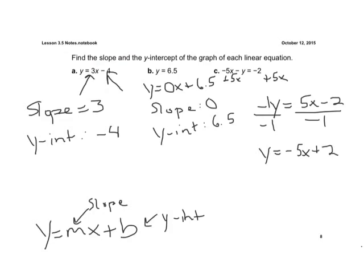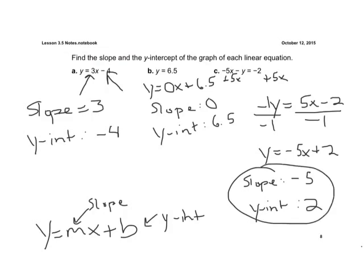And then our last step, again, slope. It's in slope intercept form, so we can pick them right out. Our slope is going to be a negative 5. Our Y intercept is going to be a positive 2. So there are our answers there. We first need to put it in slope intercept form, then we can pick them out.